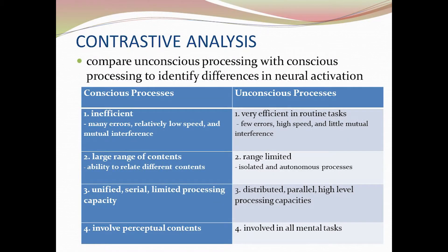Conscious processes are inefficient, cover a large range of contents, unified, serial, and limited, and involve perceptual contents. Consciousness is restricted in these ways — one thing happens after the other, and a lot of different kinds of contents are integrated in a moment of consciousness, but not that efficiently in terms of actually processing information. That sort of processing is done best by unconscious processes.